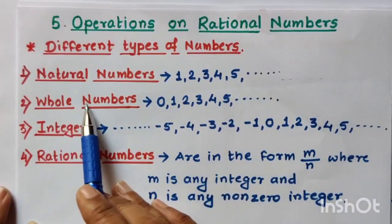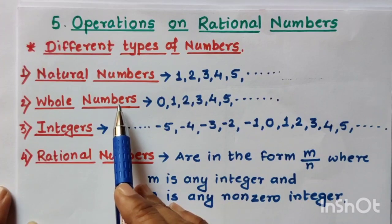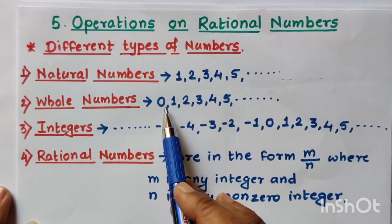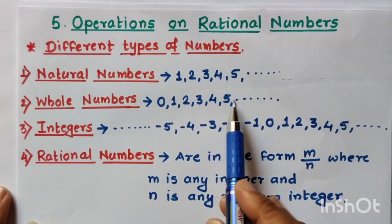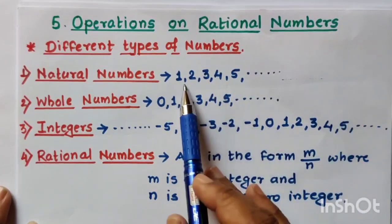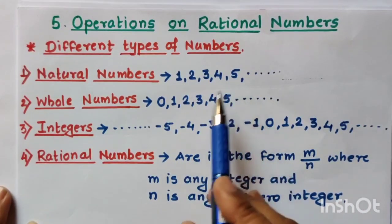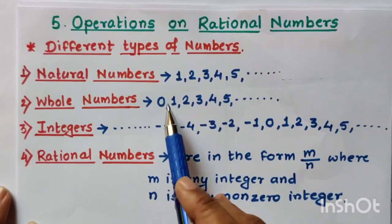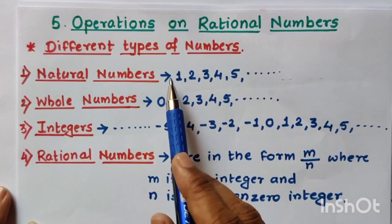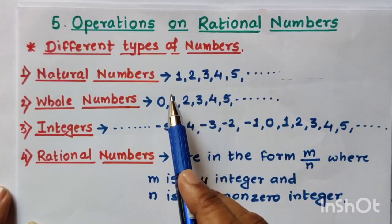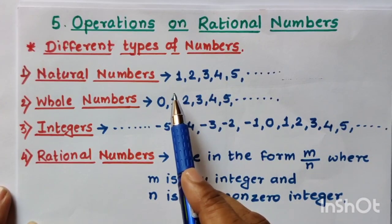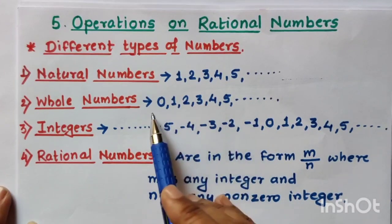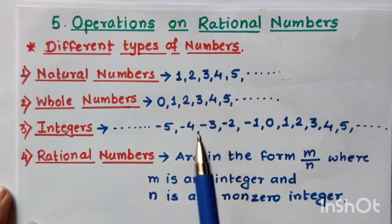The second type of numbers are whole numbers. Whole numbers start from 0, 1, 2, 3, 4, 5 and go on increasing. All the natural numbers are present in whole numbers, but whole numbers also include 0, which is not in natural numbers. That is the main difference: all natural numbers are whole numbers, but all whole numbers are not natural numbers.